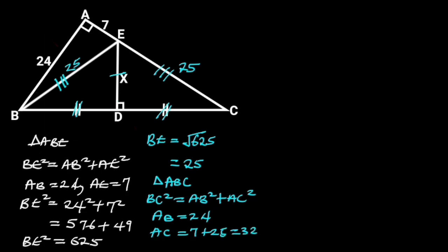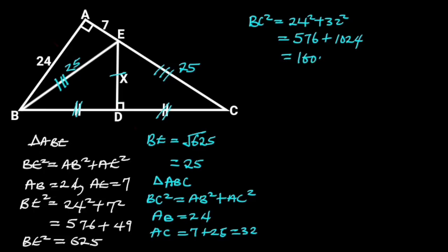Substituting these values in the equation will give us: BC squared is equal to 24 squared plus 32 squared. 24 squared is 576, and 32 squared is 1024. 576 plus 1024 is equal to 1600. So BC squared is equal to 1600. Taking the square root of both sides will give us BC is equal to 40.